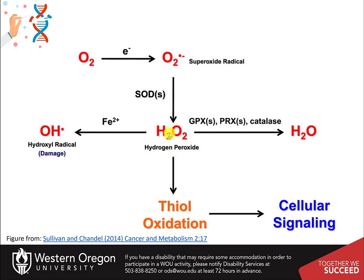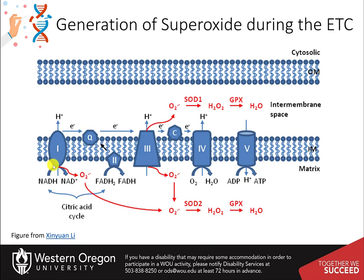Alternatively, hydrogen peroxide can be reduced to water by glutathione peroxidases (GPXs), peroxiredoxins (PRXs), or catalase. Any time proteins are transporting electrons through a system, especially with multiple transfers, there is some leakage from the system.